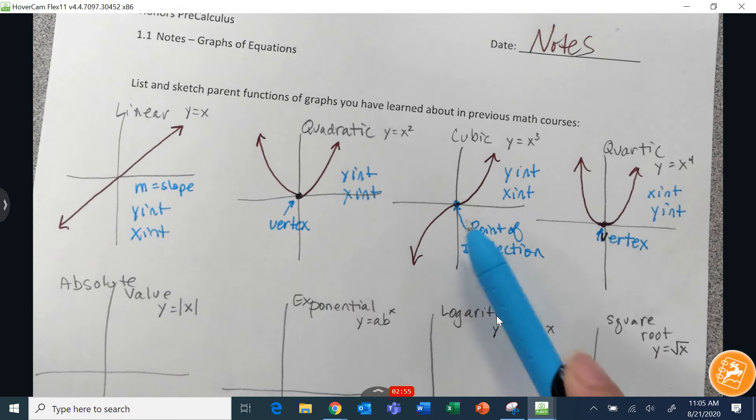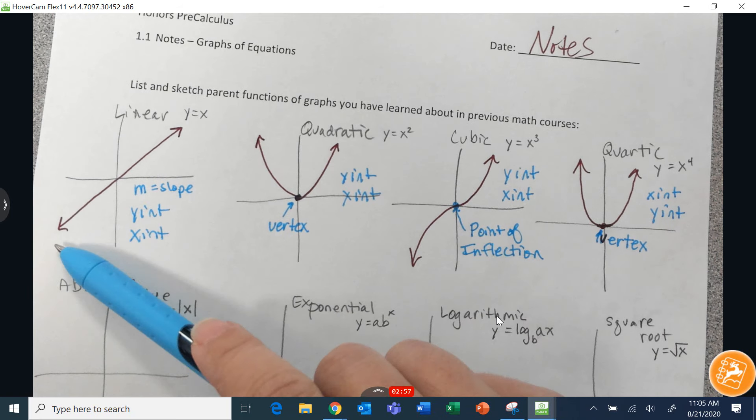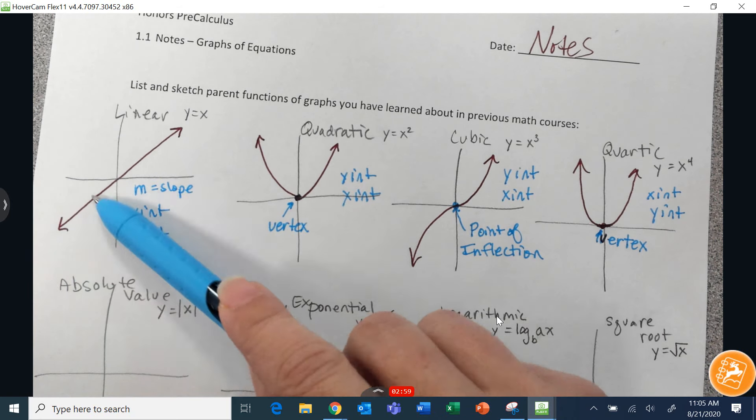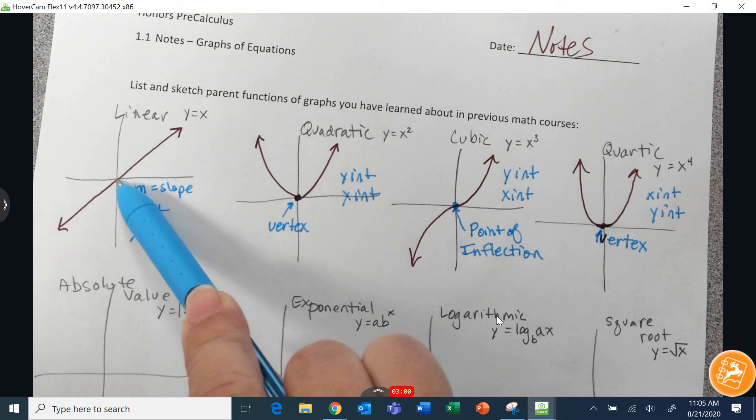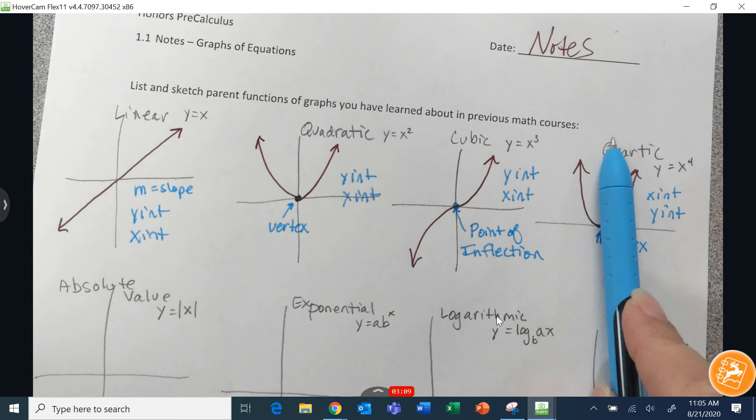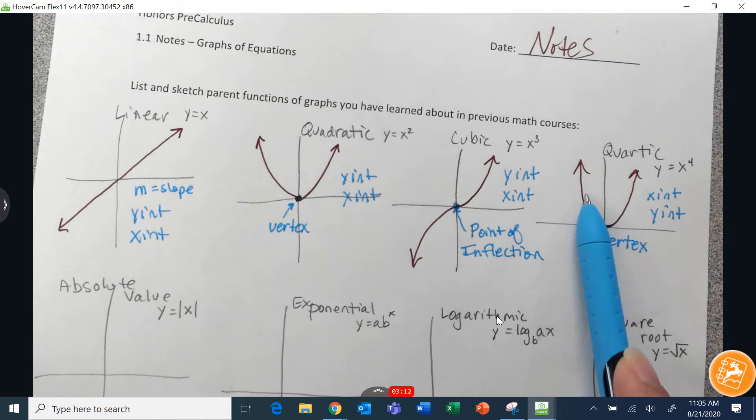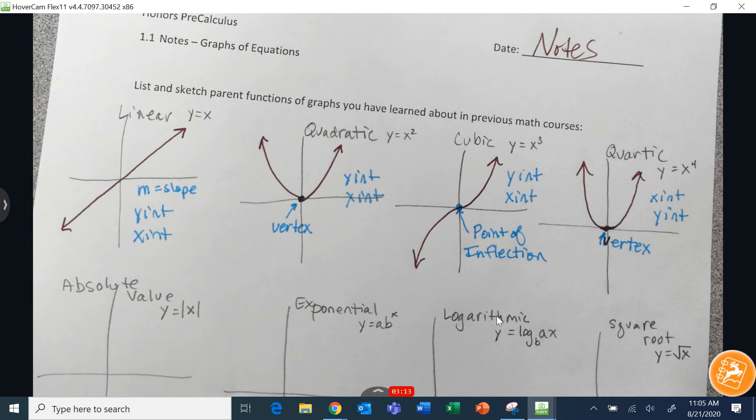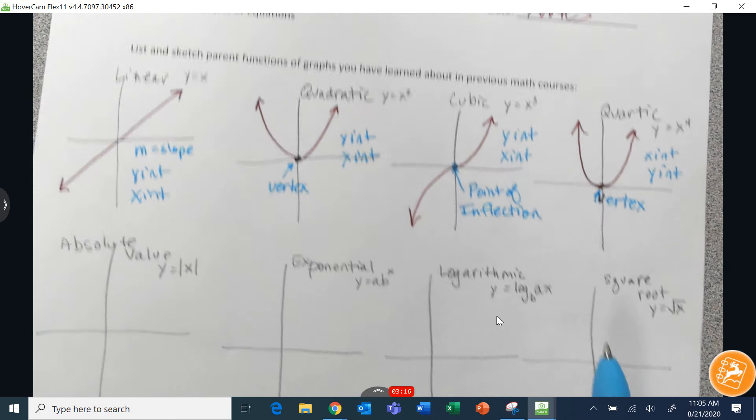The line and the cubic, those have symmetry that is rotational about the origin. And quadratic has reflection symmetry about the y-axis. That's the same with quartic. It reflects in the y-axis. So that's something that you also want to keep in mind while we go through these.